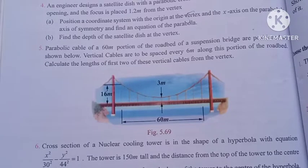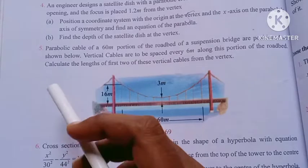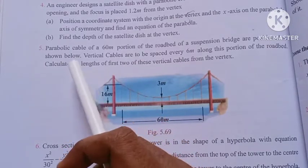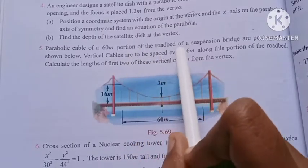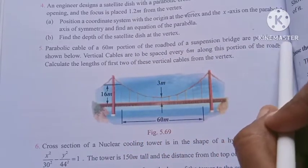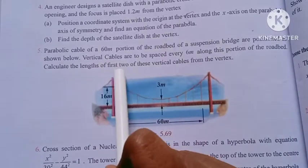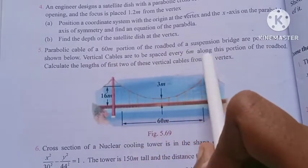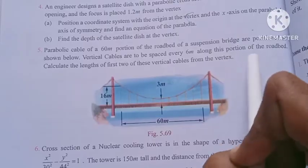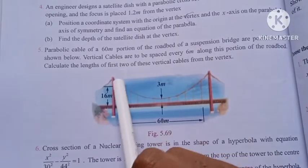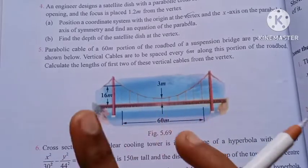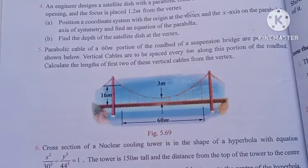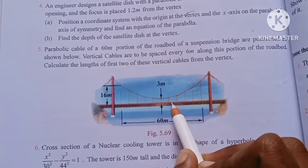Hi students, I am Vino. This is 12th Mark, Chapter 5, Exercise 5.5, Question 5. The question involves a parabolic cable of a bridge with a 6-meter roadbed. Vertical cables are spaced every 6 meters along the position. We need to calculate the length of the first two vertical cables. Let's take a diagram and find the distance from each cable.